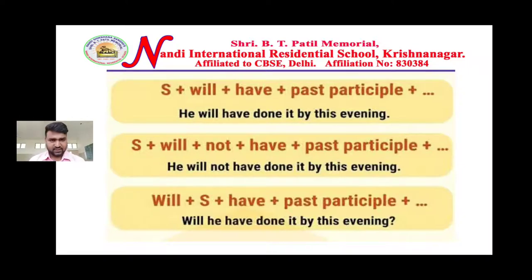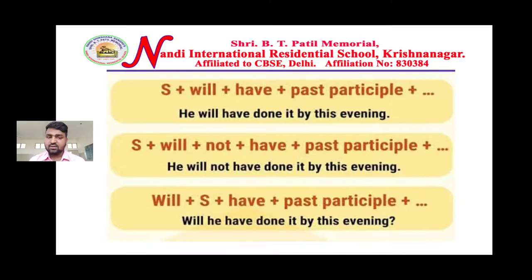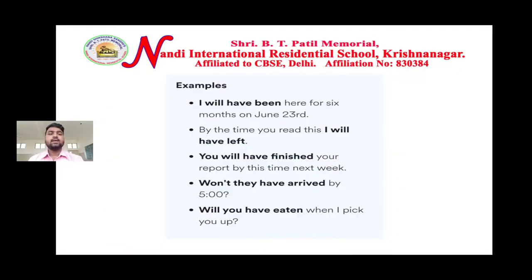For a negative sentence, the structure is: Subject + will + not + have + past participle. For example: 'I will not have done it by this evening.' For an interrogative sentence, the structure is: Will + subject + have + past participle. For example: 'Will he have done it by this evening?' — a very easy one.